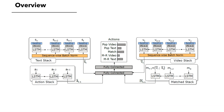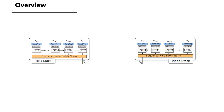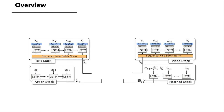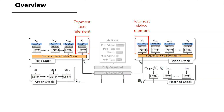We adopt an end-to-end differentiable network architecture called NewMatch. It consists of four stacks. Two of them, VideoStack and TextStack, encode their elements to be aligned. ActionStack and MatchStack capture historical information. The basic procedure of this network is to determine if the topmost video element and the topmost text element should be matched. If not, one of them should be removed. This process repeats until one of the sequences is exhausted.